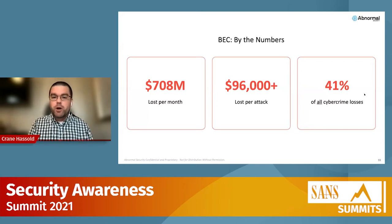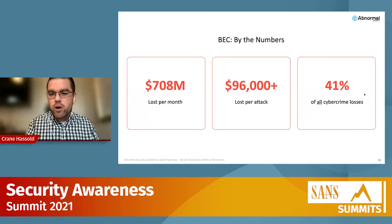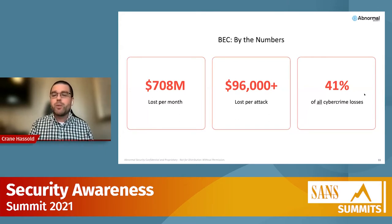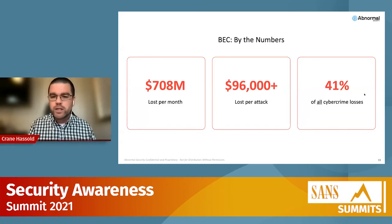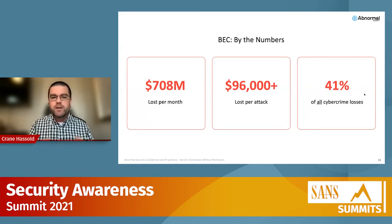The amount lost per BEC attack is about $96,000 on average. Looking at the most recent IC3 report, BEC actually adds up to about 41% of all cybercrime losses that organizations are seeing. When you compare that to other types of cybercrime activity — ransomware is a great example — it's not even close. BEC is the biggest cause of financial loss out there.